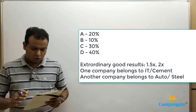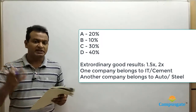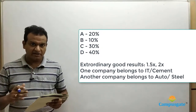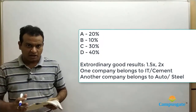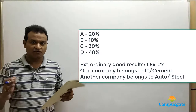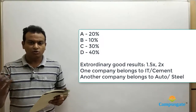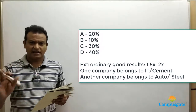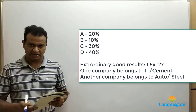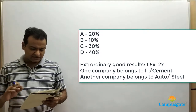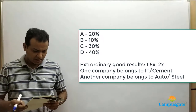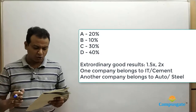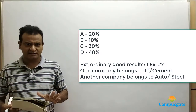It is given that two of these companies announced extraordinarily good results. His expected returns are already 20% and 10%. One company announced double the returns of what he expected, and another company announced one and a half times better results. The remaining two companies announced results as usual. This is a caselet kind of question with a large amount of data.